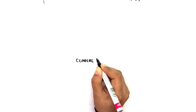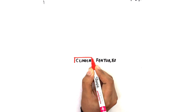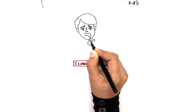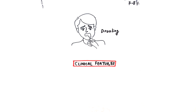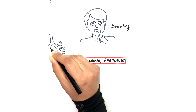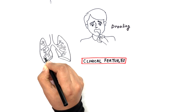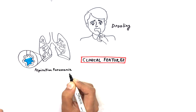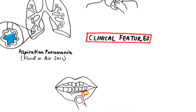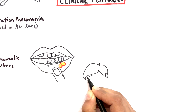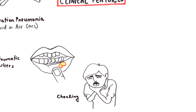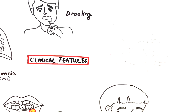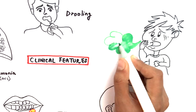Let's look at some clinical features of sialorrhea. The main clinical feature is drooling. Excessive presence of saliva in the oral cavity can cause aspiration of saliva, resulting in aspiration pneumonia. Traumatic ulcers and choking due to obstruction of the airway can also be observed. Perioral irritation and malodour can also be consequences of sialorrhea.